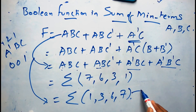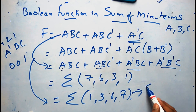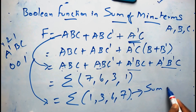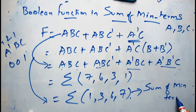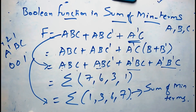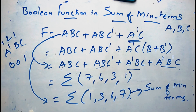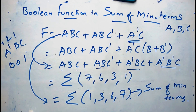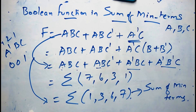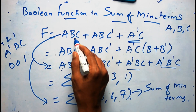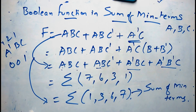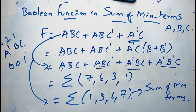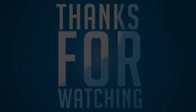This is what we call as sum of min terms. Similarly, for any function, we will represent the boolean function like this. Thank you one and all.